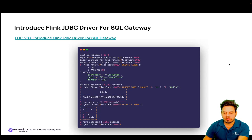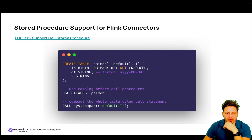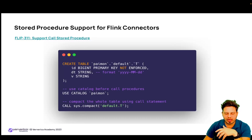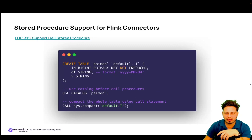FLIP-311 introduces stored procedure support for SQL connectors. Stored procedures have been around for a long time in traditional databases and offer a convenient way to encapsulate complex logic for data manipulation and administrative tasks. This FLIP mainly targets developers of Flink connectors who can pre-define custom stored procedures via the catalog interface. Users can then call procedures directly — for example, using Paimon's stored procedure to run compaction via the CALL procedure function.